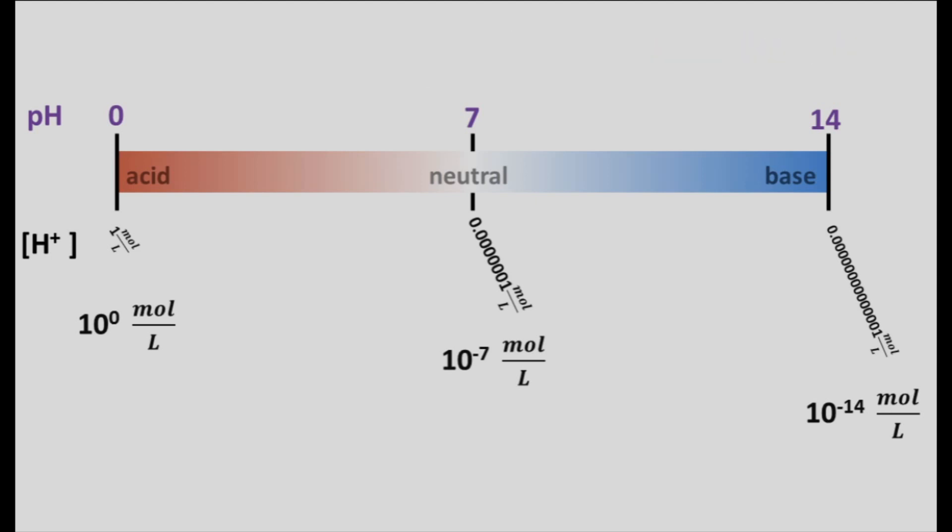And now let's do a concept check. So the pH of human blood runs approximately 7.4. Therefore, what is the concentration in moles per liter of protons in human blood? To get the answer, we take the pH value, put a negative sign in front of it. Then we raise 10 to that power to get our molarity.